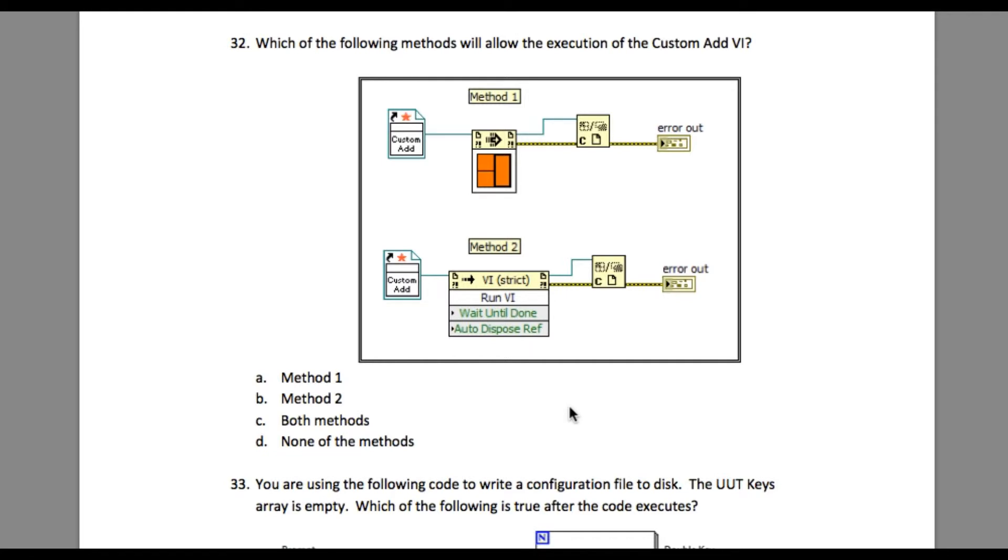It has a star on top of that, which basically means it is a strictly typed VI reference. So in this case, you can only use the Run VI using reference rather than the method node.